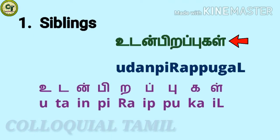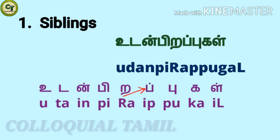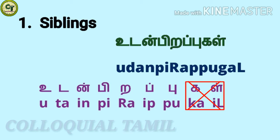For siblings together, for the singular form of sibling, just remove the last two letters.